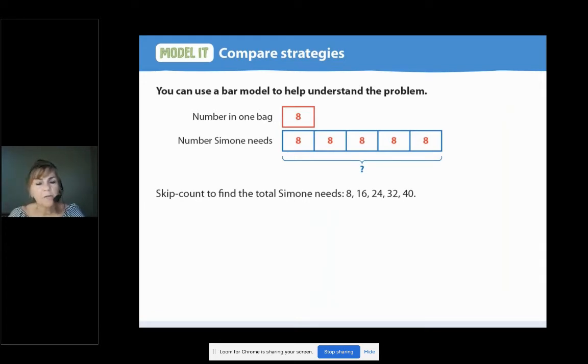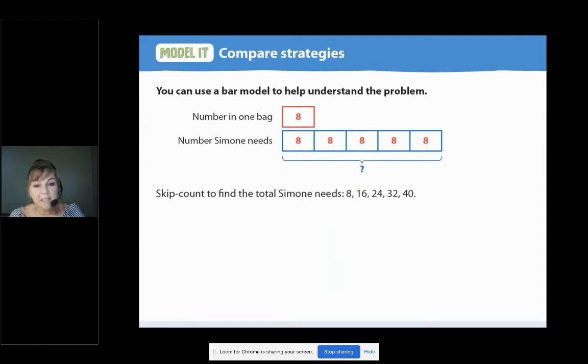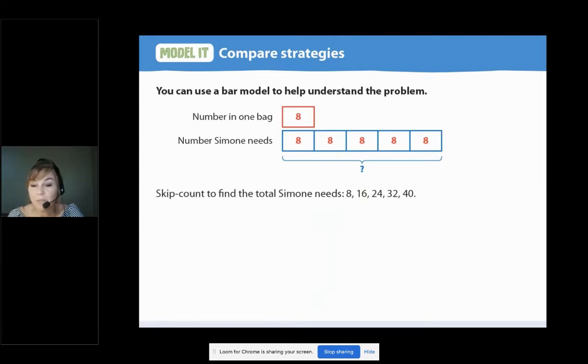Now, why are there five blue squares? I want you to pause now so you can explain that out loud. Did you say something like there are five blue squares with eights in them? Because Simone needs five times as many as are in one bag? That's using the old brain. What about that question mark under the bar model? What does it represent? Hmm. I'm thinking of a word that starts with the U. The second letter is an N. I want you to pause and write down that word. Did you write that the question mark represents the word? Say it with me. Unknown. And that's what we're trying to find, the unknown number of oranges.